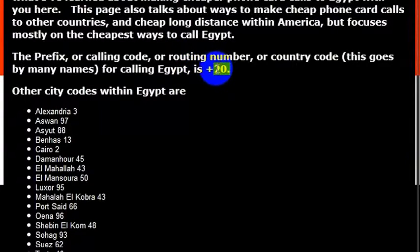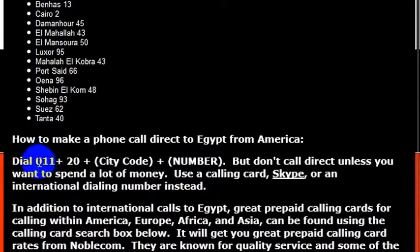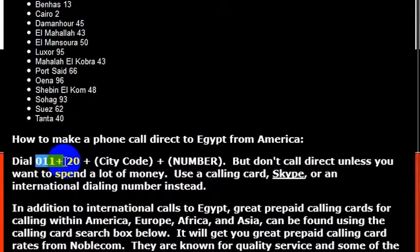To call Egypt, what we need to do is just know the country code for Egypt, which is actually 20. So to call Egypt, it would just be 011, which is the international dialing code from the U.S. from any internationally enabled phone. So I would dial 011 and then 20, which is the country code for Egypt.